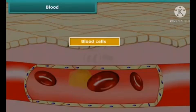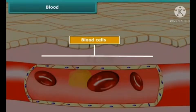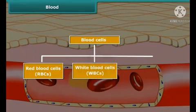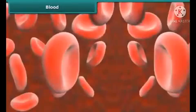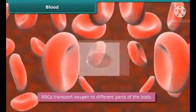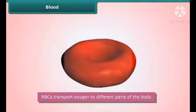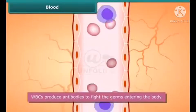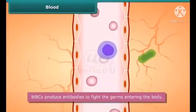There are three types of blood cells: Red blood cells (RBCs), White blood cells (WBCs), and platelets. RBCs are also known as erythrocytes. They are disc-shaped. They contain a protein called hemoglobin which is rich in iron and gives the blood its red color. Hemoglobin transports oxygen to different parts of the body.